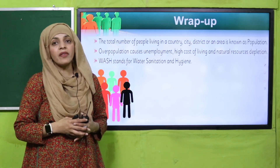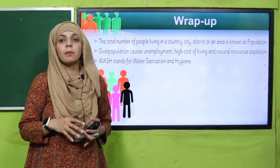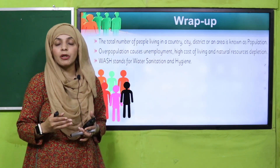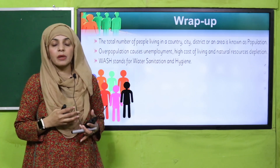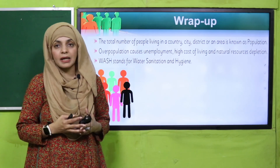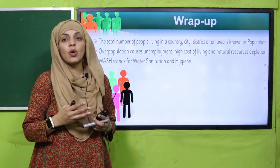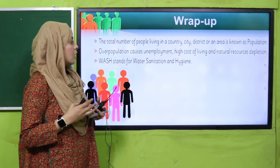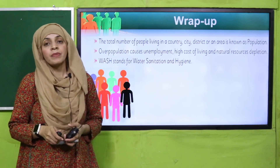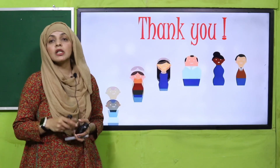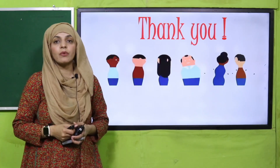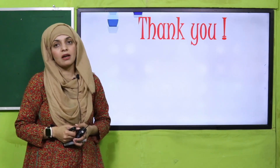And the wrap-up of the lesson is: humne is unit mein Census ke baare mein padha, Population ke baare mein padha. Iske ilawa hamne Overpopulation ko discuss kiya — kya kya usse problems cause hoti hain. Iske ilawa hamne distribution of population among different provinces of Pakistan ko discuss kiya. And we also discussed the concept of WASH, that stands for Water, Sanitation, and Hygiene. I hope you have learnt a lot from this unit and this part of unit number five. Keep everybody around you safe. Have a good day. Thank you so much and Allah Hafiz.